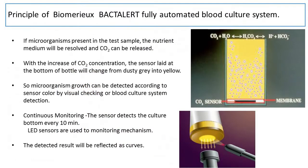If microorganisms are present in the test sample, the nutrient medium will be consumed and CO2 is released. With the increase of CO2 concentration, the sensor located at the bottom of the bottle will change color from dusty gray to yellow. Microorganism growth can therefore be detected according to sensor color by visual checking or by the blood culture system.